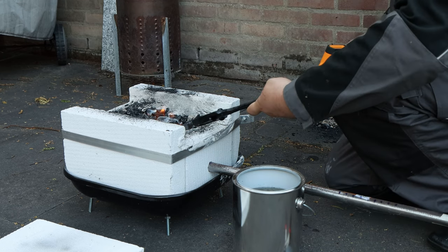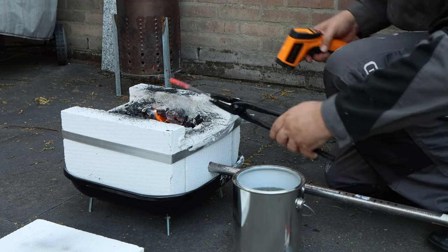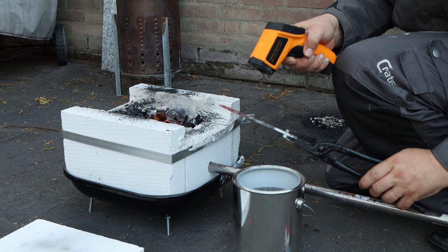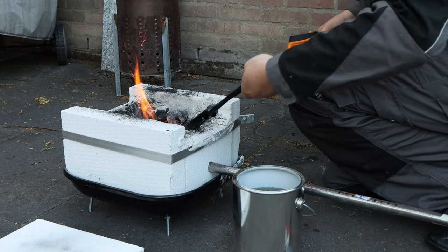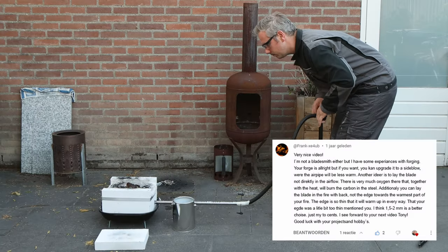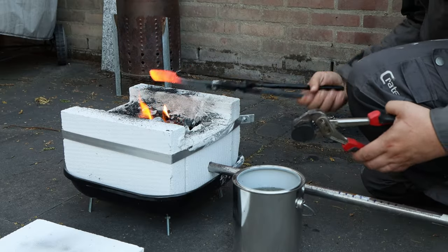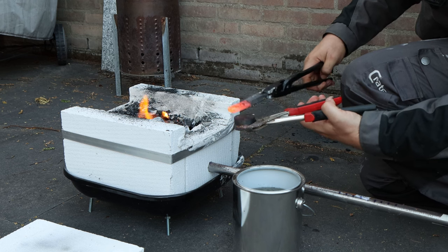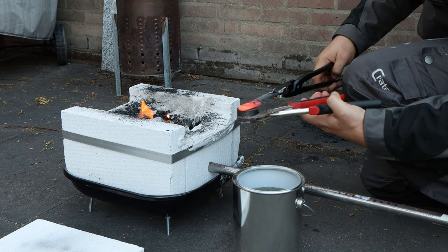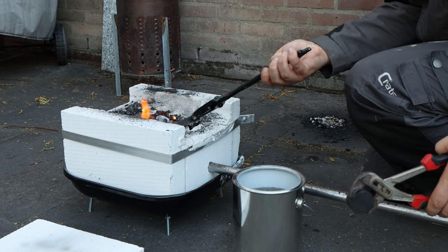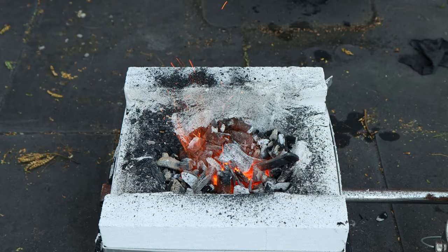For heating, I use this little DIY charcoal forge. When making my kiridashi, I had some issues with it burning the edge of the blade. I got a tip from viewer Frank to keep the edge thicker and heat the blade edge up when using a charcoal forge. That's what I did this time. If you have any tips for me regarding anything, please put them in the comments. I'm always eager to learn and all advice is hugely appreciated.